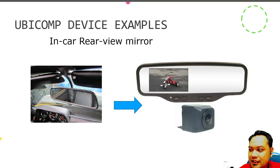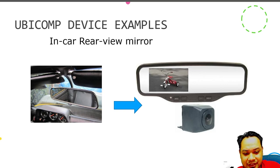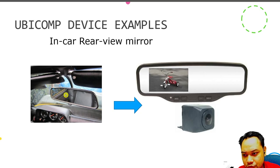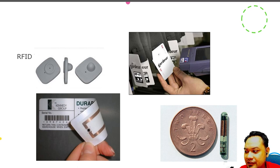Another example of a Ubiquitous Computing device is the in-car rearview mirror, which has been slowly embedded with a computer. You still have the physical mirror, but at the back of the mirror there are computing devices that can overlay information — similar to a HUD or heads-up display. There is also another form of Ubiquitous Computing where you interact with RFID or a tag that you can scan.